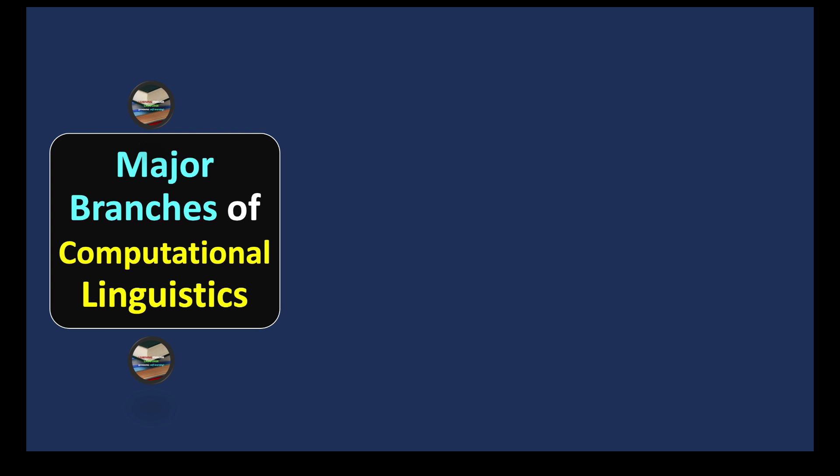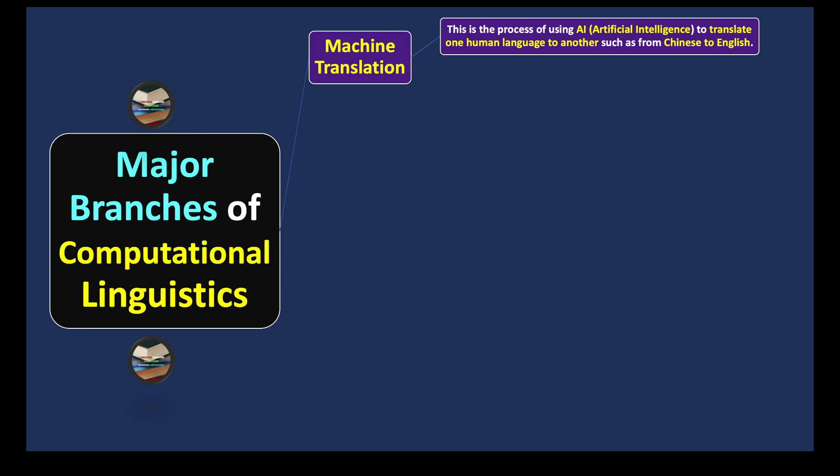Major branches of computational linguistics. The first one is machine translation. What does it do? This is the process of using AI, artificial intelligence, to translate one human language to another, such as from Chinese to English.